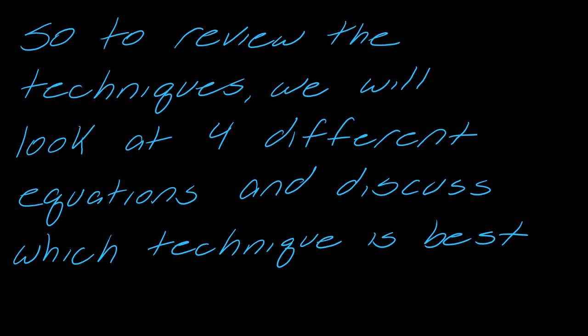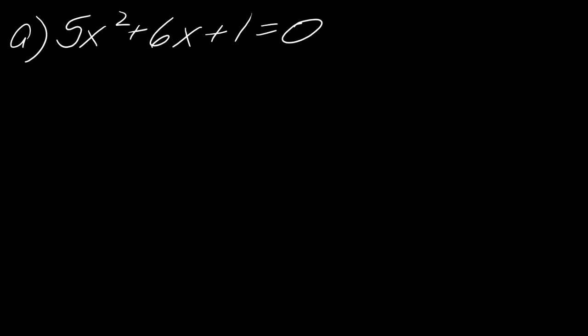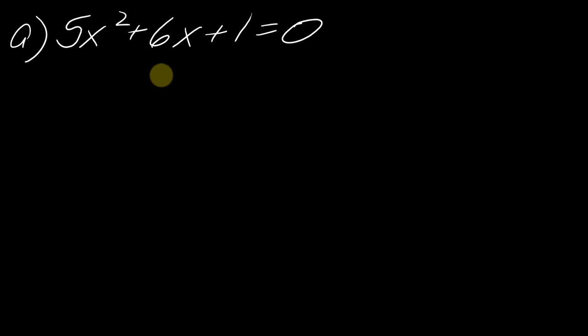I do have free guided notes — they're really helpful for videos like this and help you engage a bit more. Let's start with 5x squared plus 6x plus 1 equals 0. This one can be factored, and it might not be immediately obvious. If you're moving into a class like pre-calc, trig, or calc, a lot of times you'll be given slightly harder things that can still factor. It might take an extra minute, but it's worth your time — factoring is really one of the fastest ways to solve a quadratic.